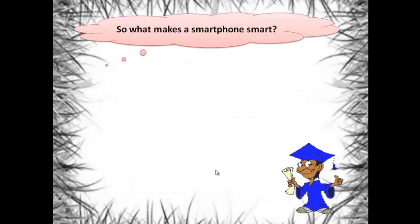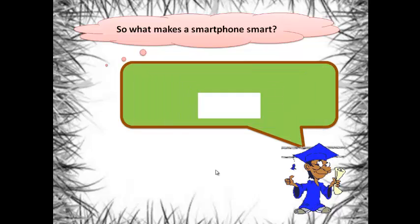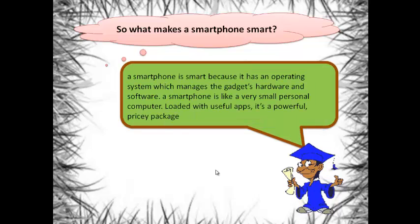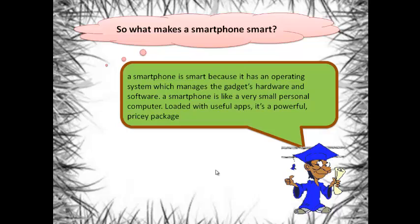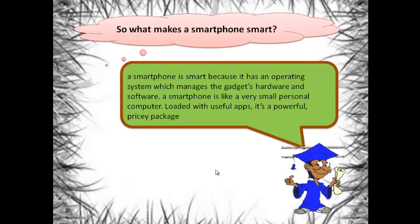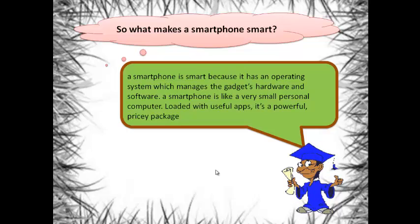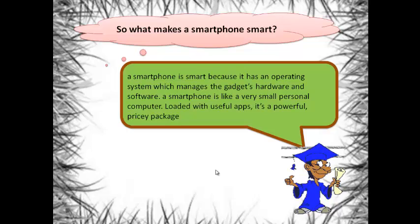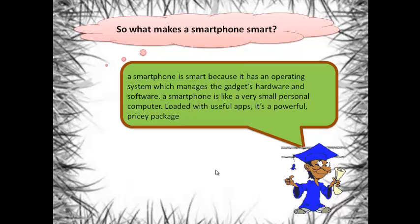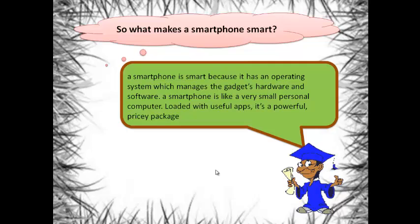So what makes a smartphone smart? A smartphone is smart because it has an operating system which manages the gadget's hardware and software. A smartphone is like a very small personal computer loaded with useful applications. It is a powerful all-in-one package.